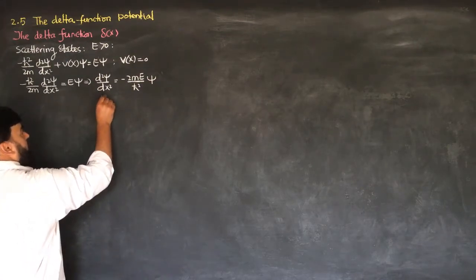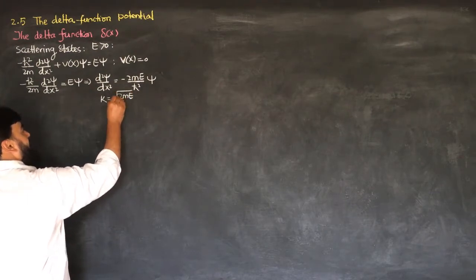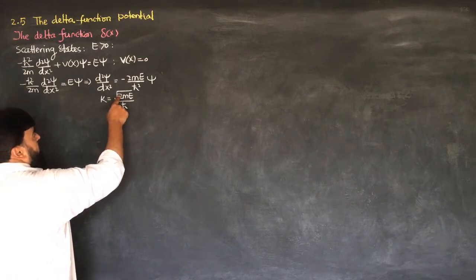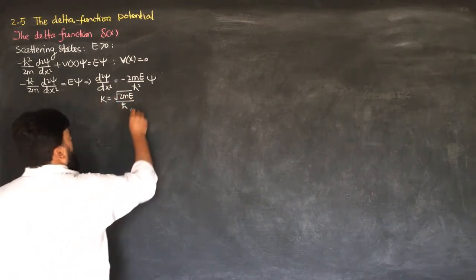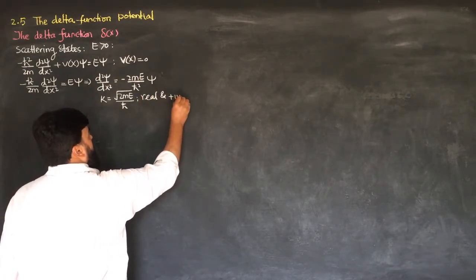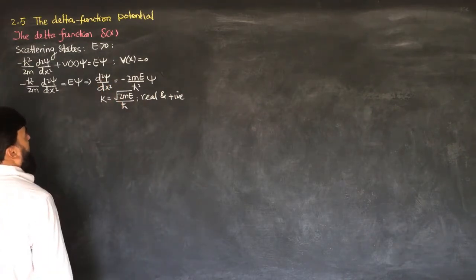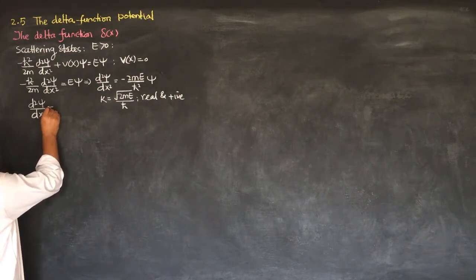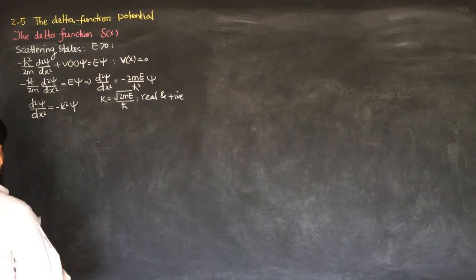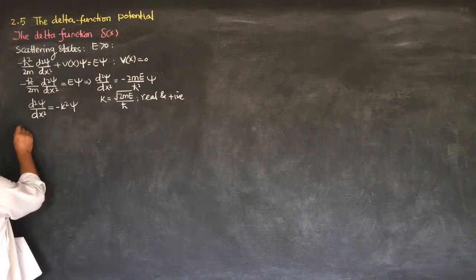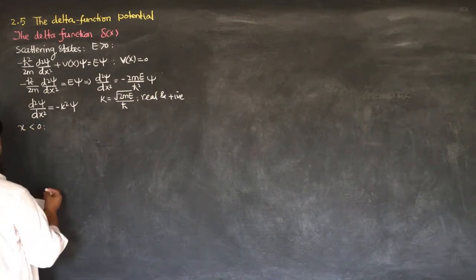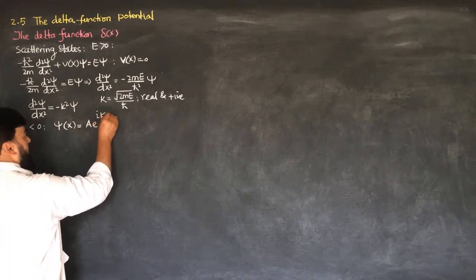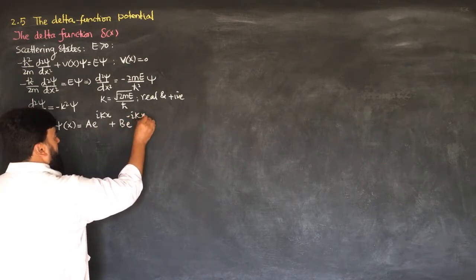We define k = √(2mE)/ℏ. We do not include a negative sign because E is positive, so k remains real and positive; the minus sign comes outside the square root. Our equation then becomes d²ψ/dx² = -k²ψ. This differential equation we have solved many times. For x < 0, the solution is ψ(x) = Ae^(ikx) + Be^(-ikx).